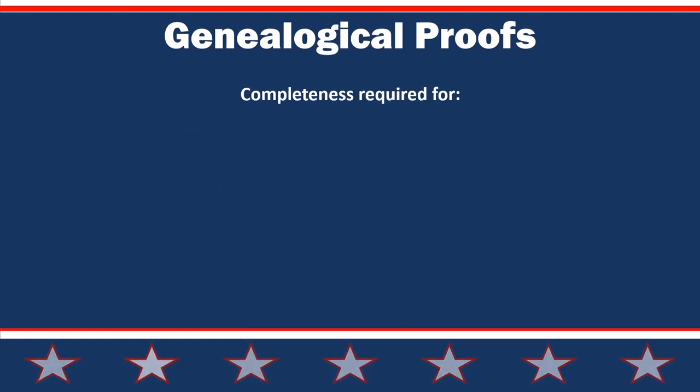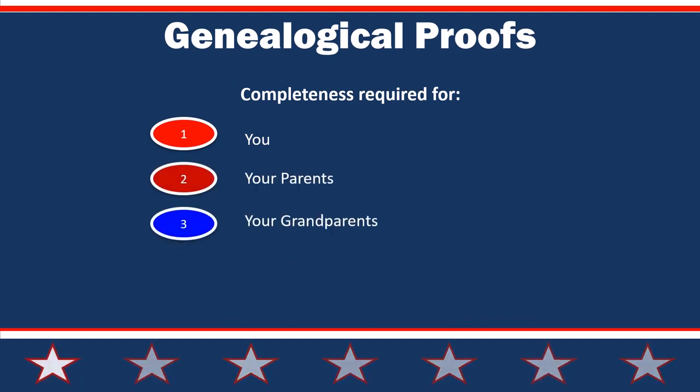In generations one, two, and three, DAR expects completeness. So you would have to provide a complete amount of information for your own birth. It used to be a requirement that if you were married, you had to provide your spouse's information — that's now optional. If you have children or nieces and nephews, you may want to go ahead and do that or anticipate grandchildren, because it makes it a whole lot easier. Sometimes getting vital records is tough, and if you go ahead and have it in the system, then it gets verified.